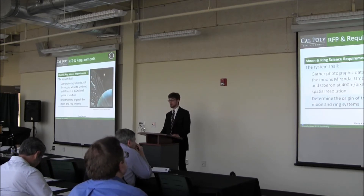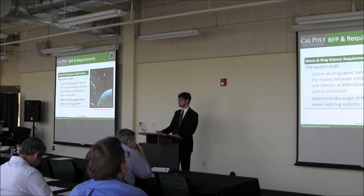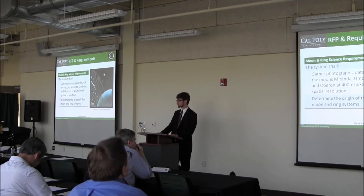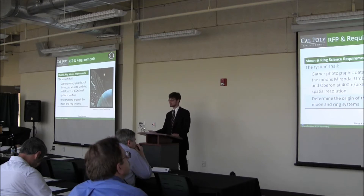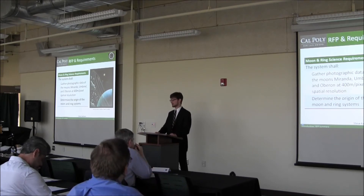We also have a requirement to do remote sensing of the moons and rings, specifically three of the five major moons: Miranda, Umbriel, and Oberon — the innermost, middle, and outermost of the major moons — as well as remote sensing of the rings. We also have a resolution requirement for imaging of the moons, so we need to get close enough to achieve our 400 meter per pixel requirement.